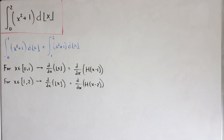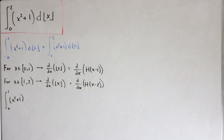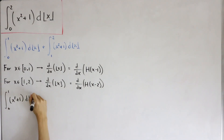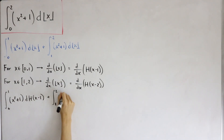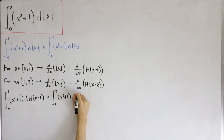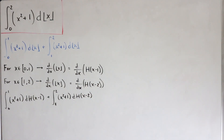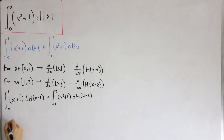This changes our integrals. We still have the bounds from zero to one of x squared plus one, but now the differential for ⌊x⌋ is replaced by the differential of H(x minus one). And from one to two, it's x squared plus one with the differential of H(x minus two). Now we introduce the Dirac delta function — a unit impulse function that equals zero everywhere except zero, and whose integral over the entire real line equals one.